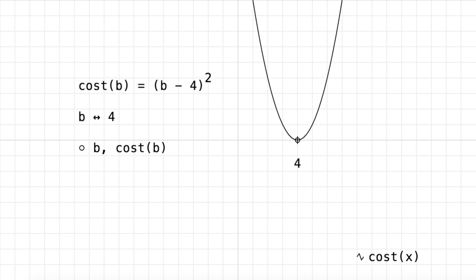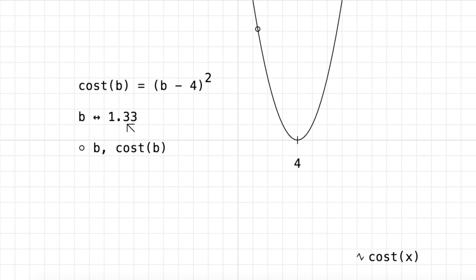We can plot a point: the x-coordinate is b, so that's the horizontal location of the point starting from 0. And the y-coordinate is the cost at b, so that's the vertical movement. I can vary b, and you can see that the further we are from our target value, the cost increases on either side. If we're below our target value of 4 — say 1.33 right now — the cost is pretty high. And if we're above, say 6.2, which is above 4, the cost is also high.